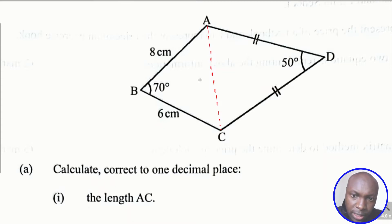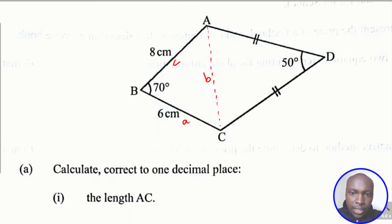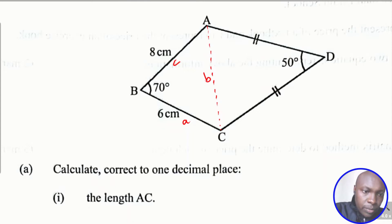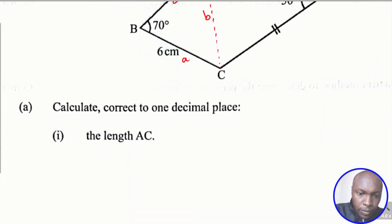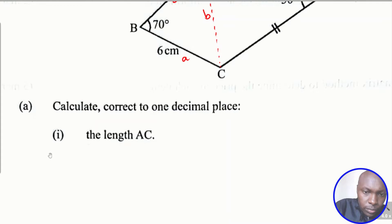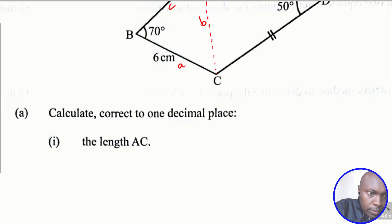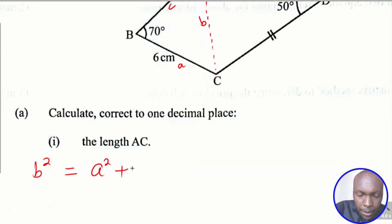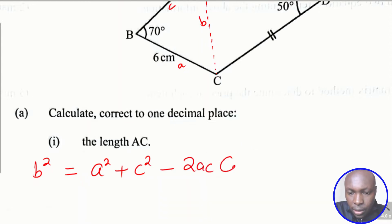Using the cosine rule, we label the sides: the side opposite A is small a, then we have sides b and c. Side b is the missing side, which is equivalent to AC. The cosine rule formula is: b squared equals a squared plus c squared minus 2ac times cosine of angle B.